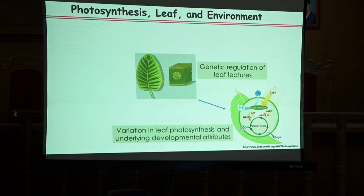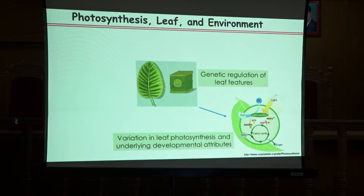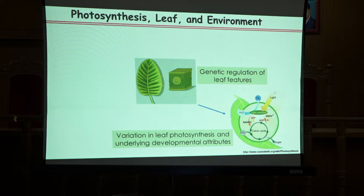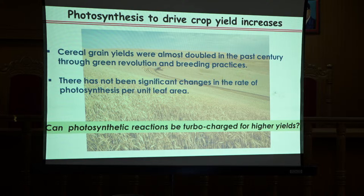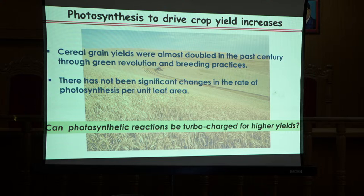Today I will mostly talk about photosynthesis variation and the genetic regulation of leaf developmental features. The first question is: why photosynthesis? We've seen an unprecedented increase in crop yield during the Green Revolution and subsequent breeding, but surprisingly there has been limited increase in the photosynthetic efficiency of crop plants during and after the Green Revolution.